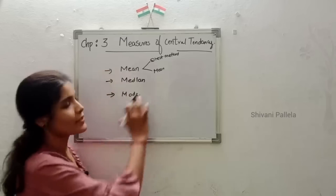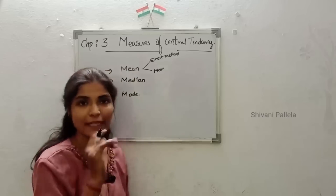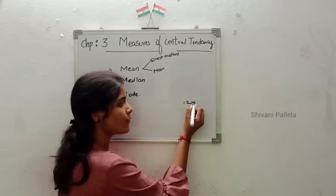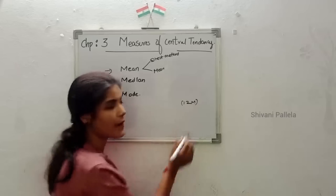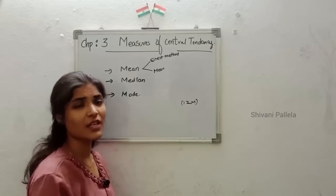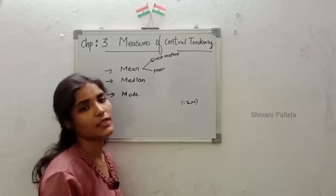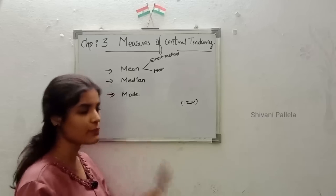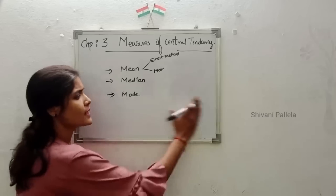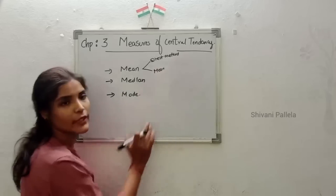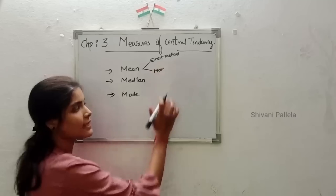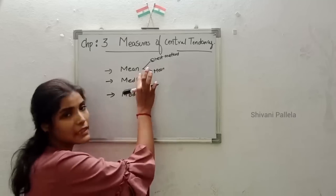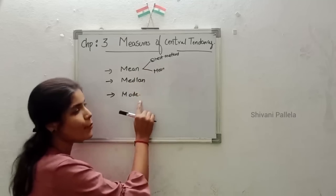In this video, I am going to discuss about the 3rd unit, which you can definitely score 12 marks in Part B. In this unit, no theory questions will be asked — only problems. In Unit 3, you are having 3 methods: Mean, Median, and Mode.